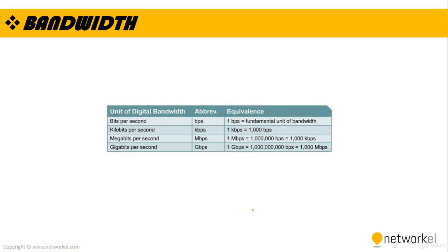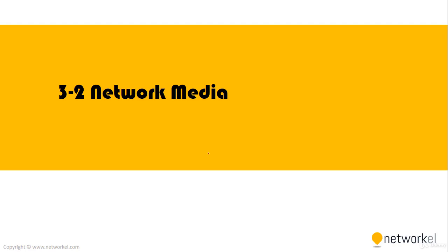Bandwidth is the bit rate of available or consumed information capacity, expressed typically in metric multiples of bits per second. For example, an internet connection with larger bandwidth can move a set amount of data much faster than one with lower bandwidth. The abbreviations used are kbps for kilobits per second, mbps for megabits per second, and gbps for gigabits per second.